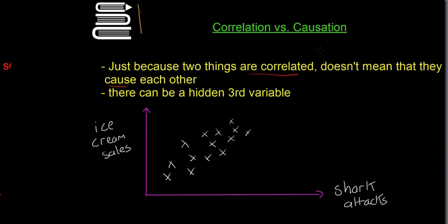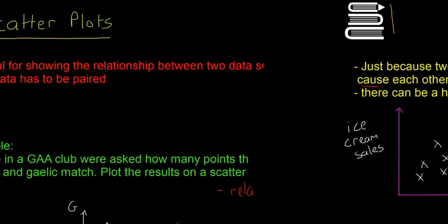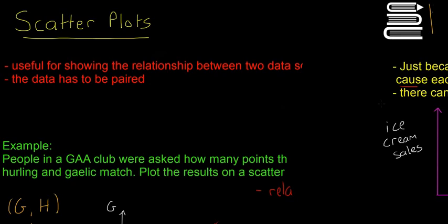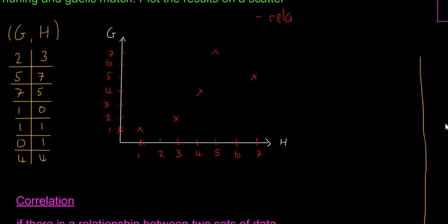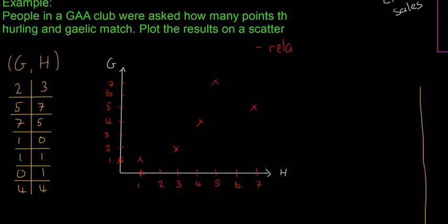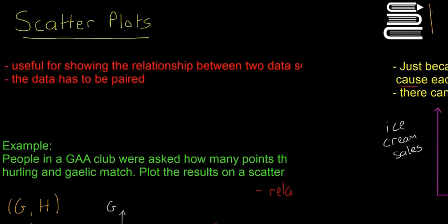So that's just the last thing, that correlation doesn't necessarily imply causation. Sometimes they ask you to explain that in the exam. That's pretty much everything about scatter plots. Hopefully that all made sense. If you did like and share with your friends. I'll cut it short now because it's getting a little bit long. In the next video we're going to look a little bit more about scatter plots, but the line of best fit. We'll see you next time and thanks for watching.